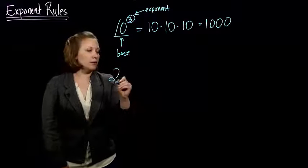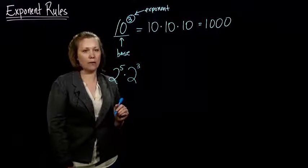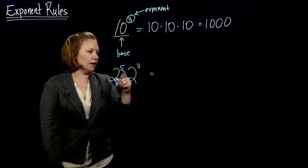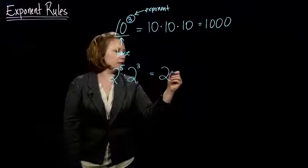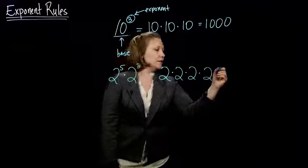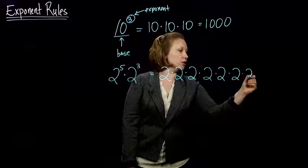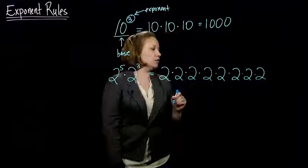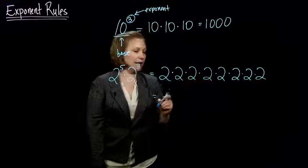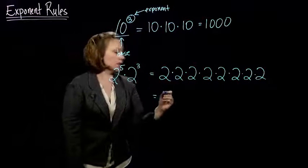So, suppose I wrote 2 to the 5th power times 2 to the 3rd power. Well, if we write out what these are, 2 to the 5th power tells me to take 2 and multiply it by itself 5 times. And then I'm going to multiply that by 2 to the 3rd power, which tells me to multiply 2 times itself 3 times.